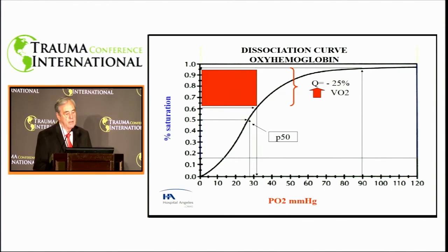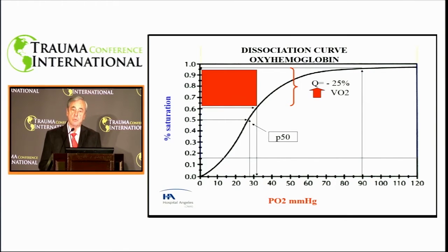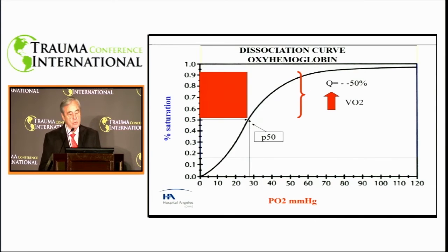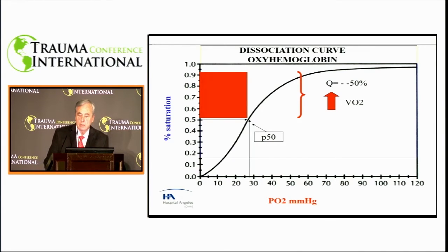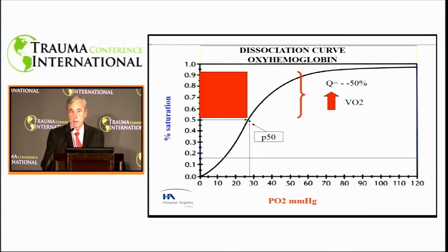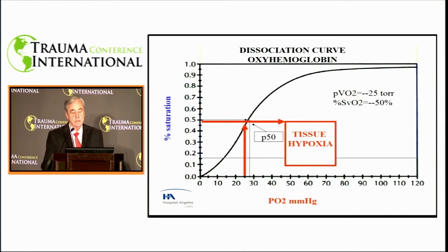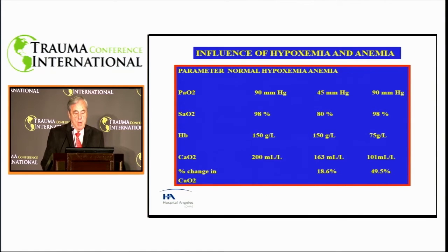If the central venous saturation drops to values such as 60, it is most likely because cardiac flow decreased 25% or because there is an increase in oxygen consumption due to some factor. If it drops to a PVO2 of 27 with a saturation of 50%—which is P50—then we are quite sure that cardiac flow dropped 50% or there was an increase in oxygen consumption as noticeable as during maximum exertion. Measuring central venous blood can help us infer certain changes in circulation and whether the patient is undergoing tissue hypoxia.